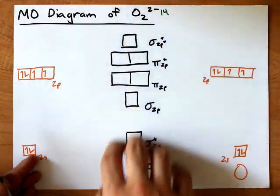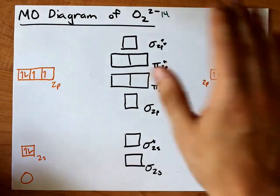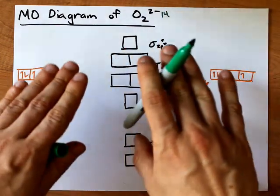Long story short, this is the MO diagram for O2, F2, and Ne2, as long as you put the proper number of electrons in.